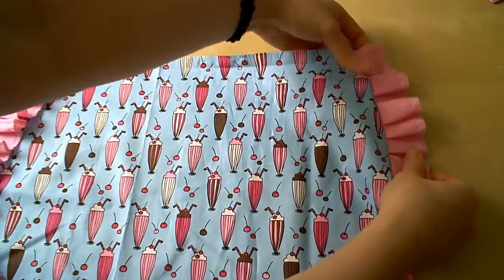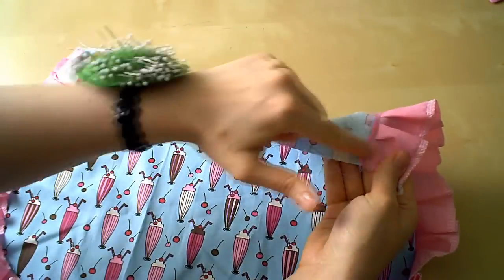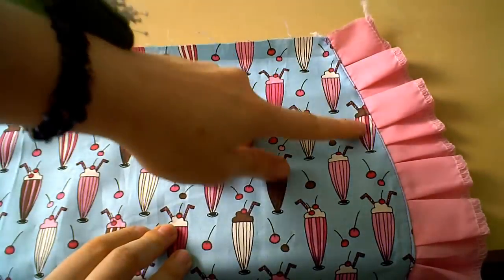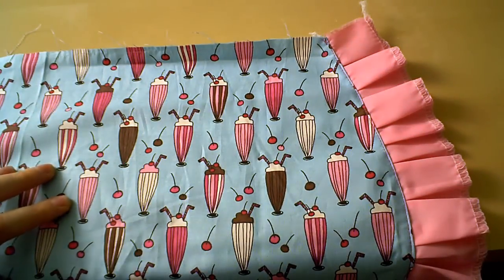The next step, whether you sewed your own ruffle trim or used pre-ruffled trim, is to press the seam towards the apron with the iron. When you're finished pressing, topstitch around the trim seam.